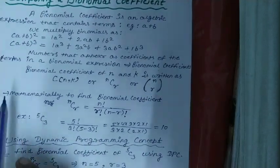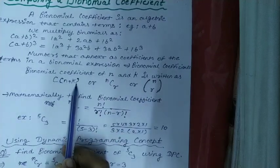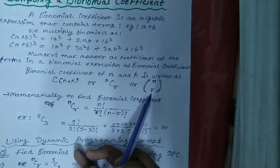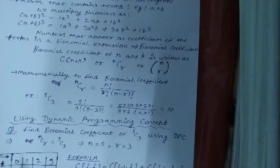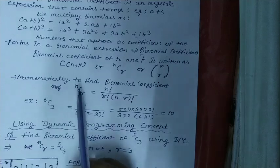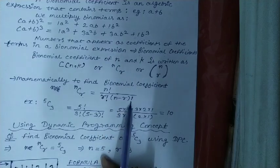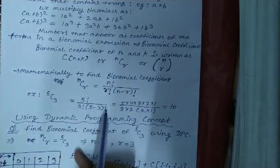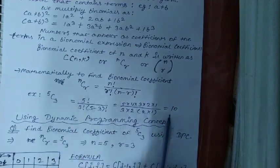Binomial coefficient of N and K is written as C(N, K). It can also be written as N C R, or simply N and R inside a bracket with a gap between them. If you try to find it using mathematical ways, the formula is: N C R equals N factorial divided by R factorial times (N minus R) factorial. For example, 5C3 equals 5 factorial divided by 3 factorial times (5 minus 3) factorial, which comes out as 10.